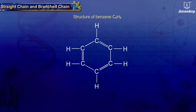Structure of benzene C6H6. Benzene ring consists of a cyclic structure made up of six carbon and six hydrogen atoms.